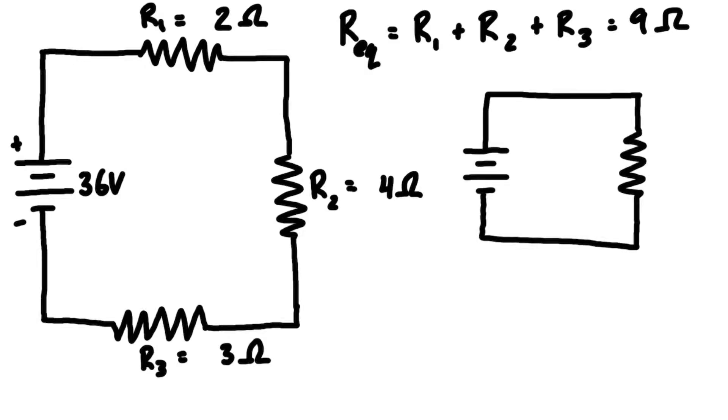So we have 36 volts and 9 ohms. Then we take Ohm's law, which is V equals IR, and we're going to rearrange for I.